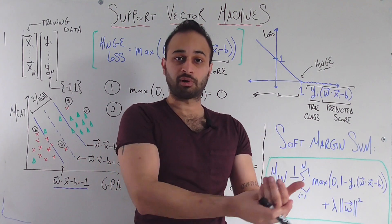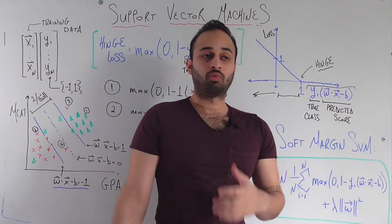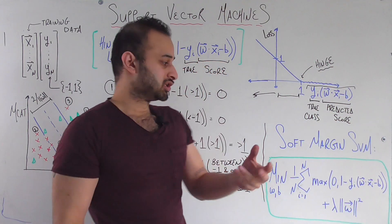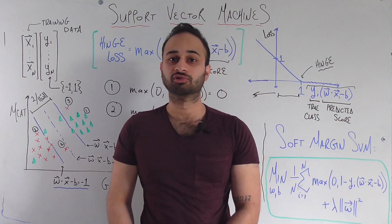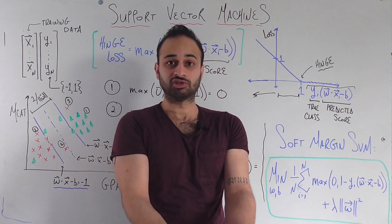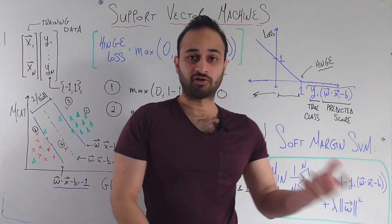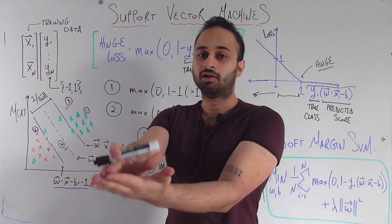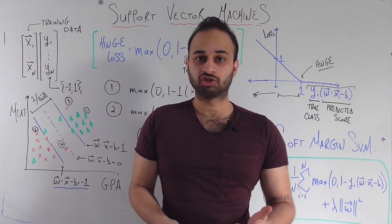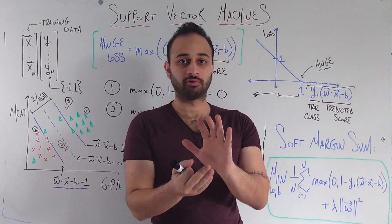But that's not the end of the story. In the spirit of SVM, we also want to maximize the margin, which is analogous to minimizing the magnitude of w. So we add a second term: lambda times the squared magnitude of w. This formula is telling a very interesting story — we're simultaneously doing two things: maximizing the margin (second term), and keeping the misclassification loss in check (first term).